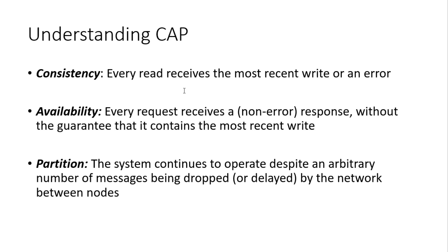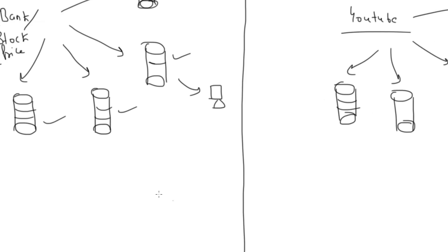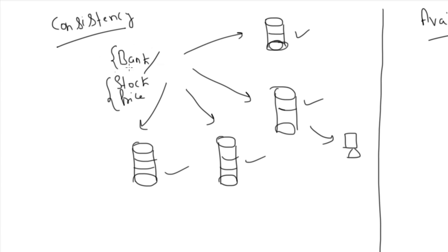CAP stands for: C means Consistency, A means Availability, and P means Partition. Consistency says that every read receives the most recent write. Let's see an example — let's say I'm doing a bank transaction, or I am a stock broker who updates the price of stocks.